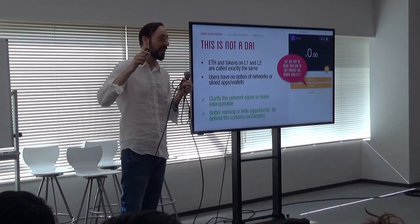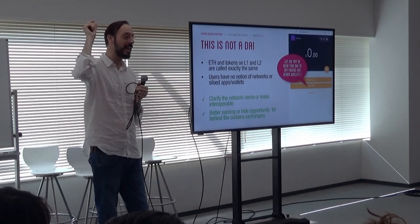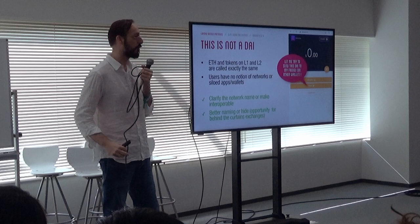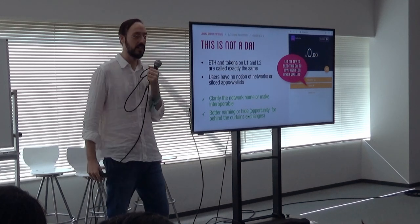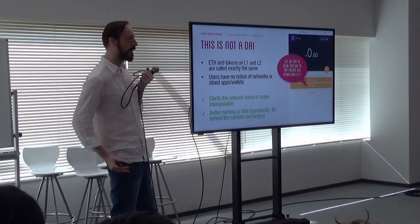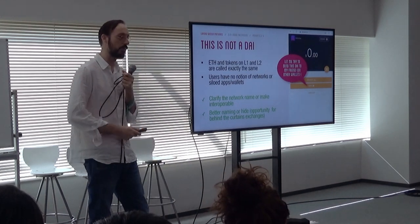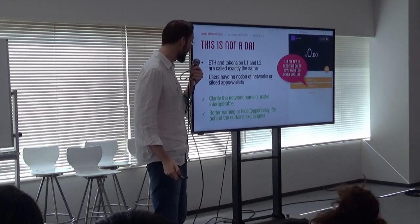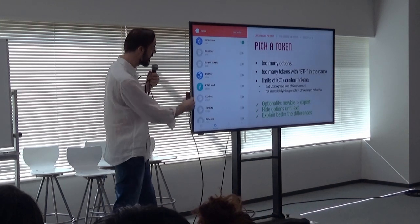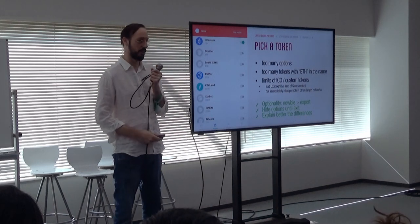Solutions here: as written in the design principles a very long time ago, define or explain what network you are using — be transparent. Or make it interoperable. This is an invitation for all the layer 2 developers to talk together and say: yes, we can call it DAI, but if somebody tries to send it to someone else, we should behind the curtains be converting and onboarding it onto the other network. Or work together somehow. And better naming — maybe they should be called DAI state channel one, DAI Plasma one, etc., so that users could also find each other better.